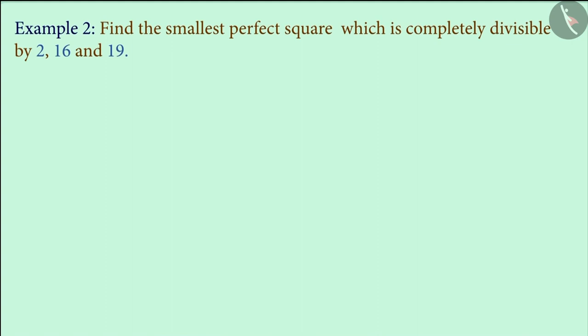Let us see another example. Find the smallest perfect square which is completely divisible by 2, 16 and 19. If we had to find only a number that was divisible by these three numbers, then we would have to find the LCM of these three numbers.